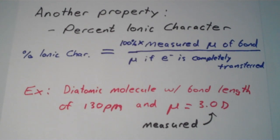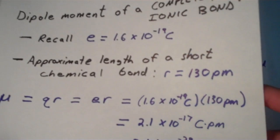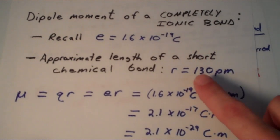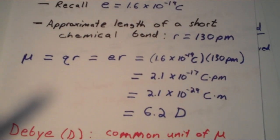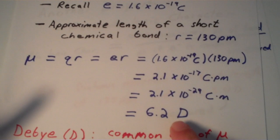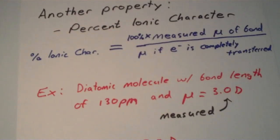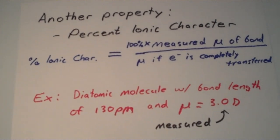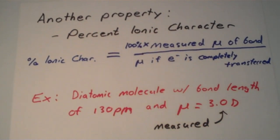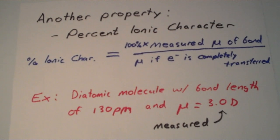We just established a second ago that when we make the assumption that the bond length is 130 picometers, our dipole moment, if the electron is completely transferred, is going to be 6.2 Debyes. That takes care of our denominator in this problem. Our numerator is simply going to be that measured dipole.